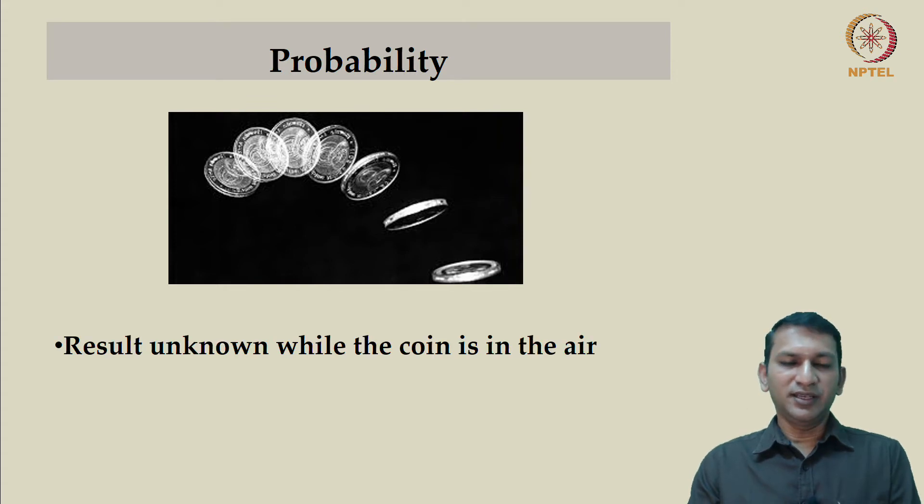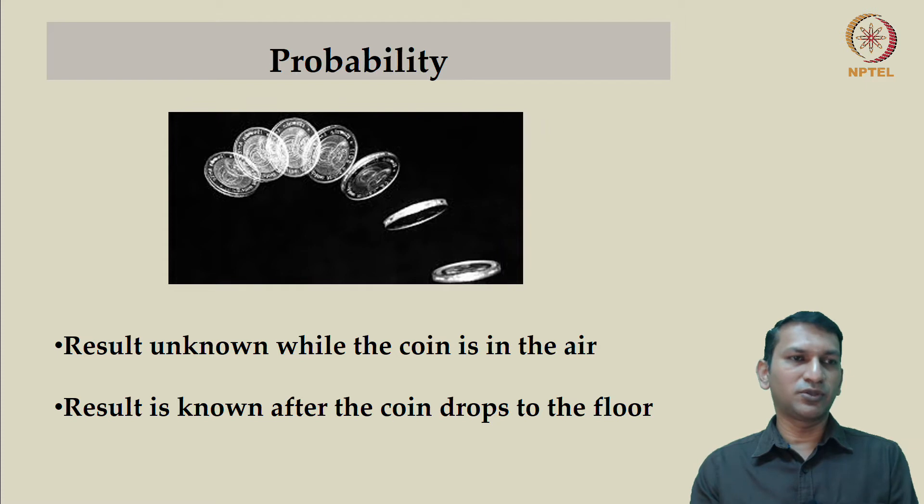Interestingly, when you toss a coin, the result is unknown while the coin is in the air. However, once the coin drops to the floor, it is easy to verify whether you won a head or a tail. So probability exists before the experiment or hypothetically even without doing the experiment. Now, how does this compare with fuzziness?